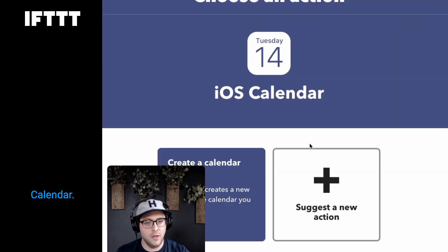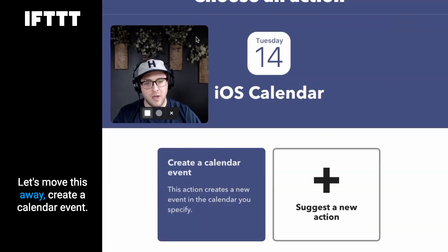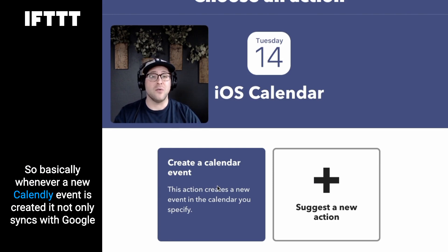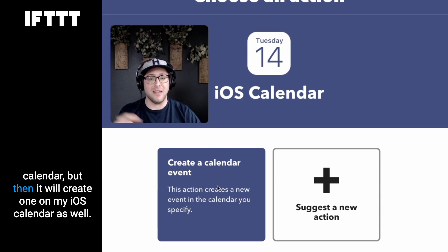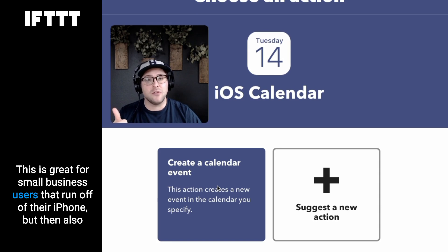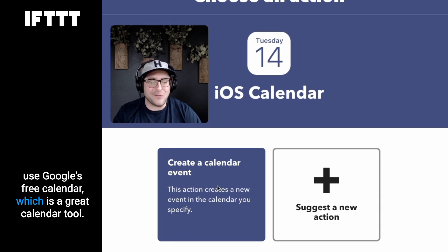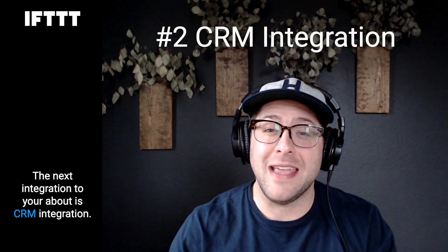To start syncing your calendars it's really easy. Naturally, let's say Calendly runs off of Google Calendar, but I have an iPhone and I want to make sure that my Google Calendar events are synced with my iOS Calendar events. So let's add iOS Calendar — boom — create a calendar event. Basically whenever a new calendar event is created it not only syncs with Google Calendar but then creates one on my iOS Calendar as well. This is great for small business users that run off their iPhone but also use Google Calendar.